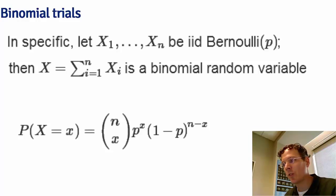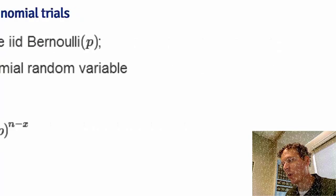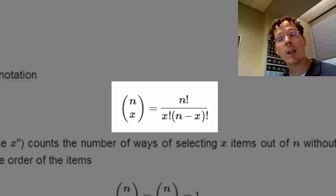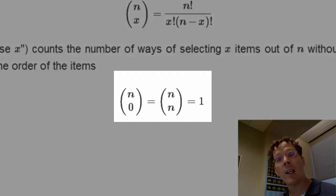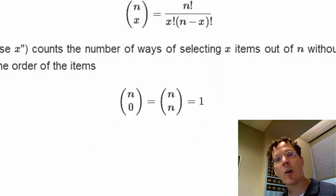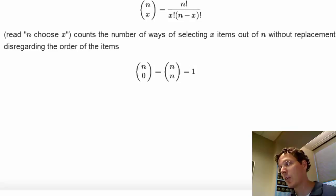The binomial mass function looks a lot like the Bernoulli mass function, though with n choose x out front. Recall that the notation n choose x stands for n factorial over x factorial n minus x factorial. And n choose 0 and n choose n are both 1. This solves a particular combinatorial problem of counting the number of ways of selecting x items out of n without replacement disregarding the ordering of the items.